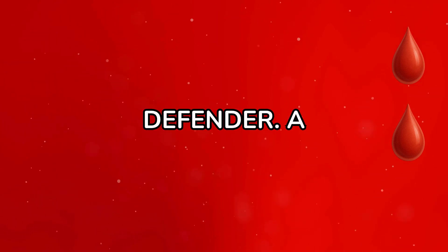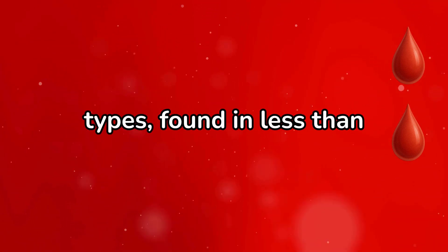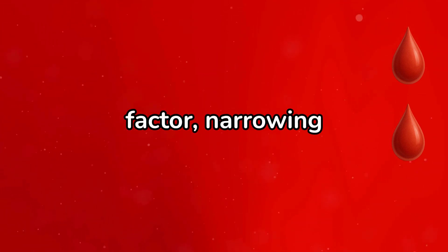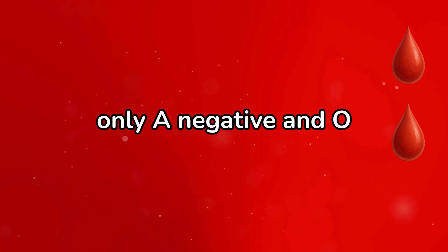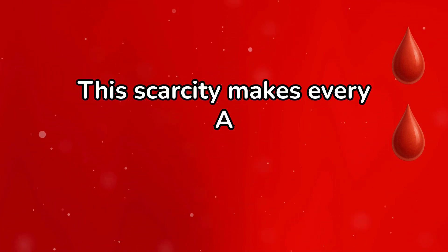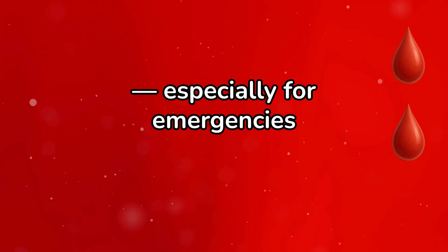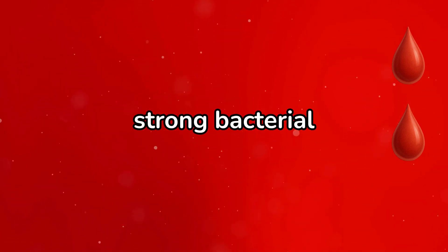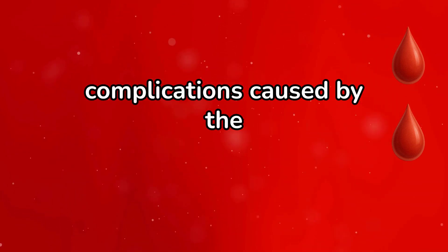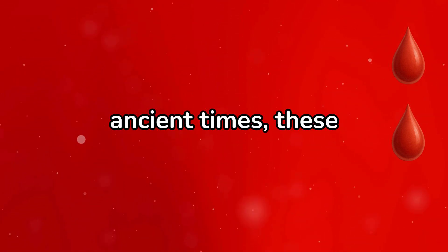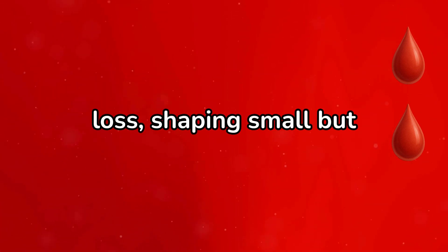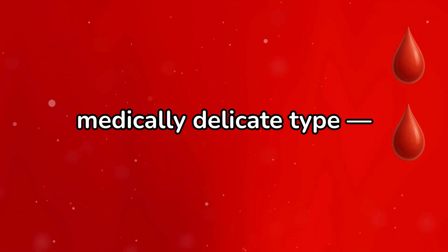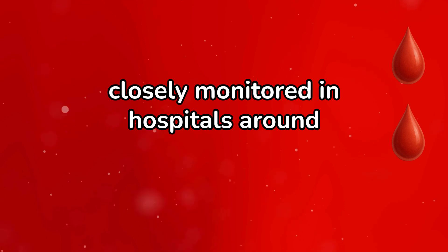A negative, the rare defender. A negative is among the rarest blood types, found in less than 2% of the global population. It carries the A antigen but lacks the RH factor, narrowing transfusion compatibility to only A negative and O negative donors. This scarcity makes every A negative donation crucial, especially for emergencies where compatibility is life or death. From an evolutionary lens, A negative combines strong bacterial defenses with the reproductive complications caused by the absence of RH. In ancient times, these immune advantages may have balanced the risks of pregnancy loss, shaping small but resilient genetic lineages. Today, A negative remains a medically delicate type — rare, valuable, and closely monitored in hospitals around the world.